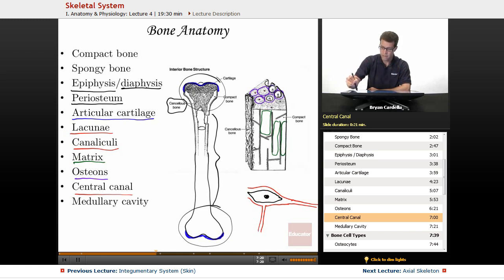And then finally, medullary cavity. The word medulla means inner. So medullary cavity, this region within the middle here that's hollow, is the medullary cavity. There you're going to have a lot of bone marrow.